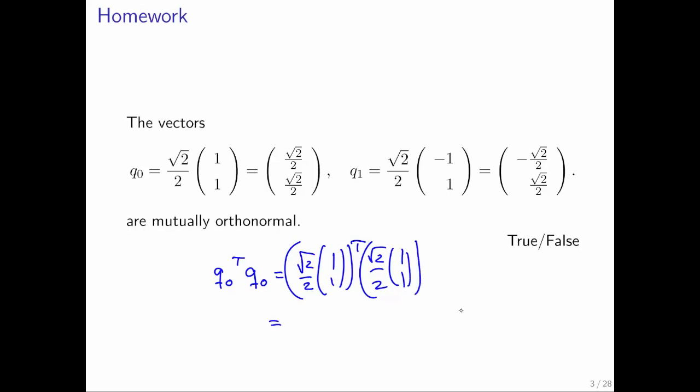You can bring the two square root of 2 over 2's out and multiply them together to get 1 half. Then you do the inner product of (1, 1) with itself, which gives you 1 half times 2, which equals 1. Similarly, you can determine that q1 is of length 1 and that q0 is orthogonal to q1.